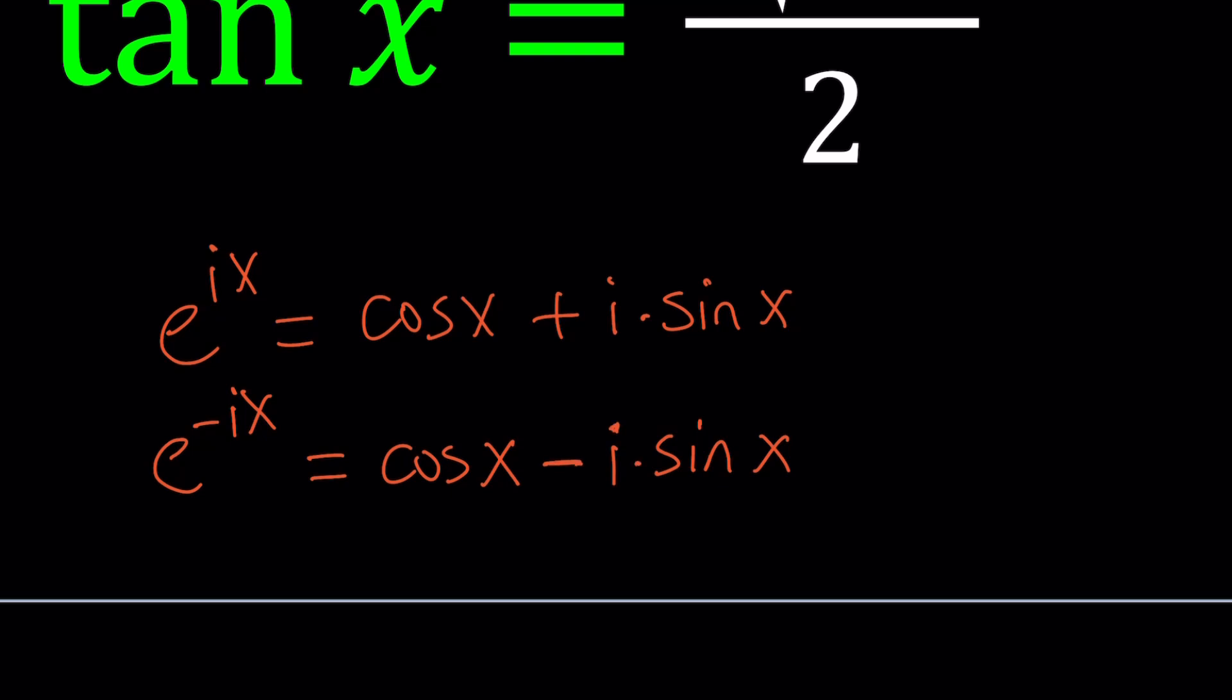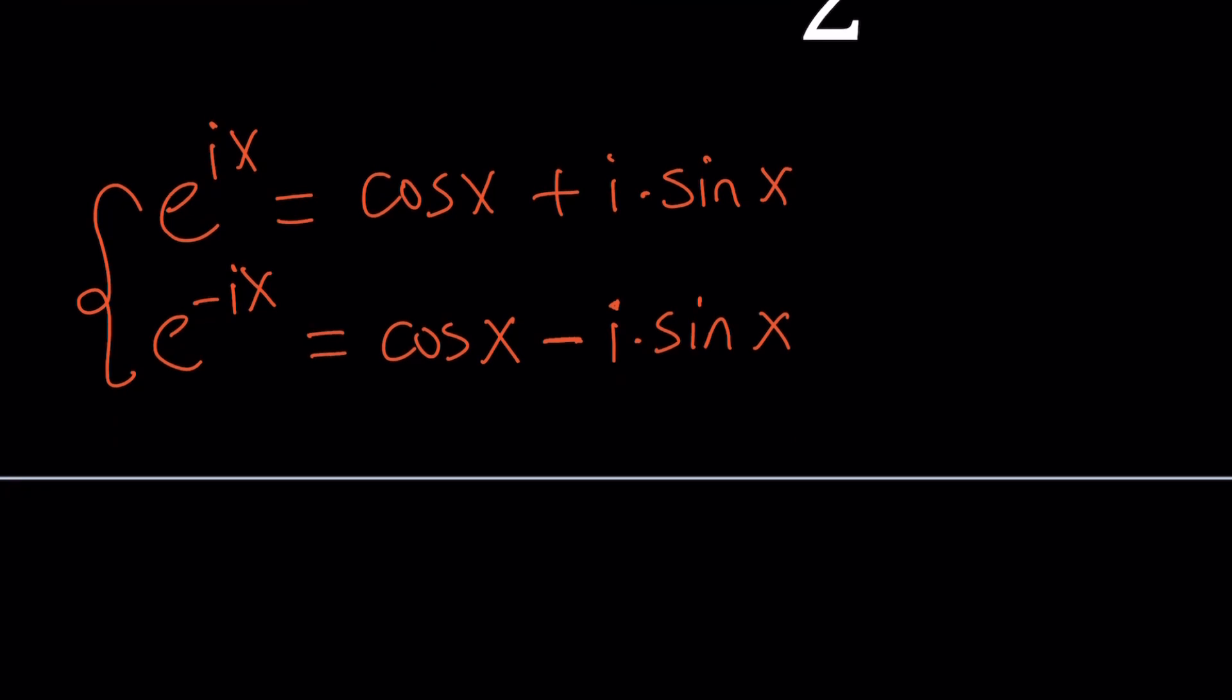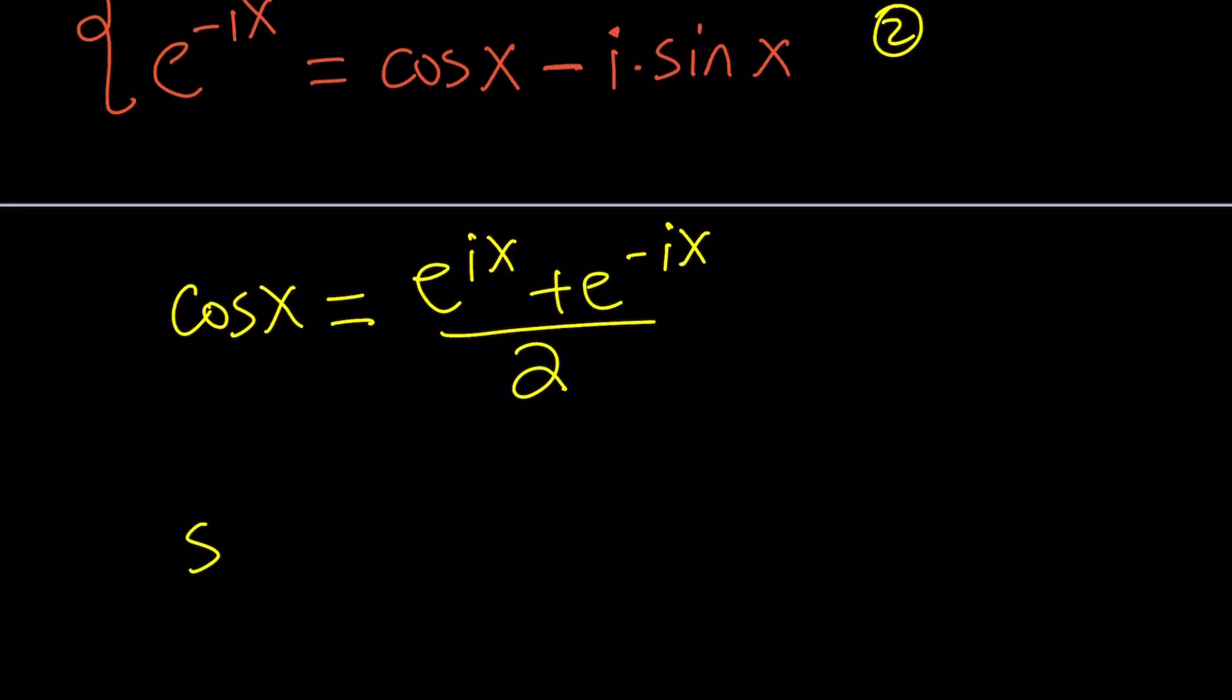Let's go ahead and put these two together and find expressions for sine and cosine, which we're going to use to write something for tangent. If you add these equations up and divide by 2, you get the following. Cosine x can be written as e to the ix plus e to the negative ix divided by 2.